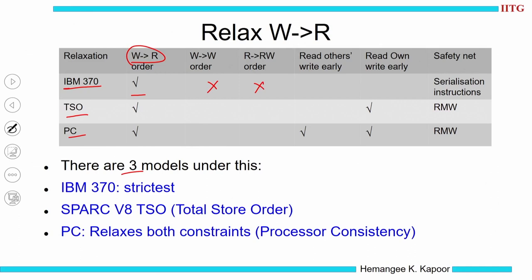Regarding read-own-write-early: IBM 370 does not permit anything — write atomicity has to be strictly maintained. The TSO model says you can read your own write early but do not read others' write early. The third one — PC — says you can read others' write early and you can read your own write early. So we have three models: IBM 370, SPARC V8 TSO — TSO is short for Total Store Order — and PC, which stands for Processor Consistency.